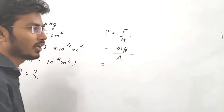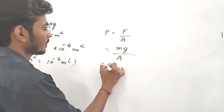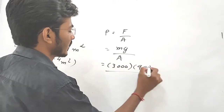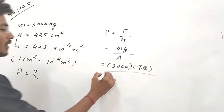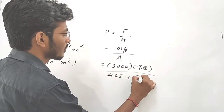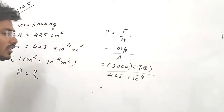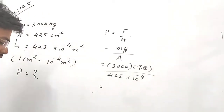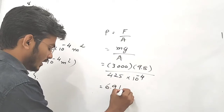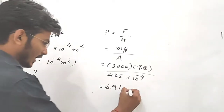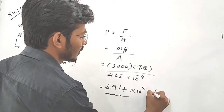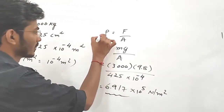Now, substituting the given values: m = 3000 kg, g = 9.8, divided by area = 425 × 10⁻⁴. Calculating, our answer is 6.917 × 10⁵, and the unit of pressure is Newton per meter square.